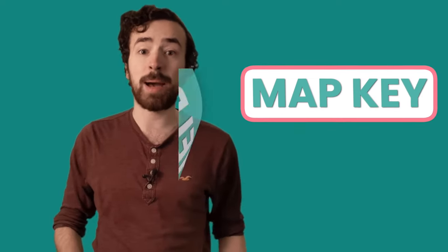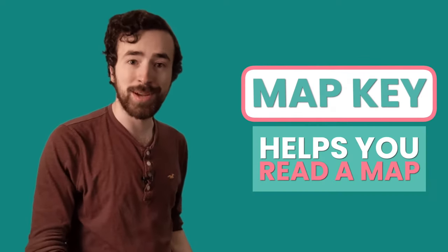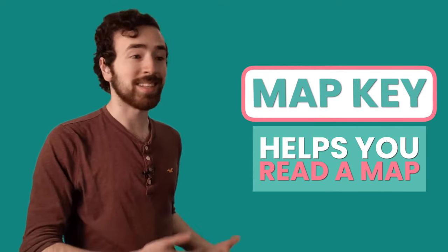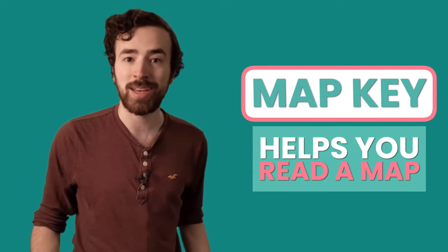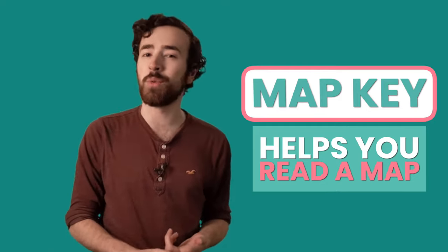So I bet you're wondering, what do emojis have to do with maps? Well, today we're going to learn how to read a map. You can read a map by using the map key. And the map key gives us symbols, much like emojis, that tell us information. It helps you read the map and lets you know what you're looking at.